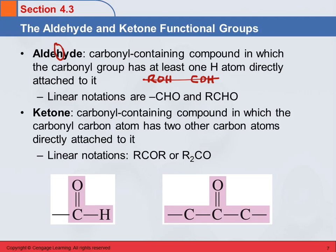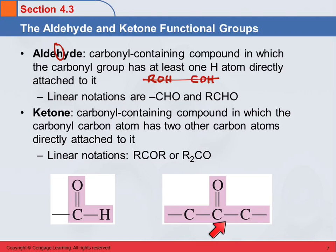A ketone is a carbonyl-containing compound where the carbonyl carbon has two other carbons directly attached to it. This is the aldehyde functional group, and this is the ketone functional group. The difference is that on the ketone, the carbonyl carbon does not have a hydrogen on it at all, whereas in the aldehyde it does.